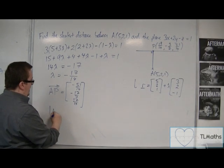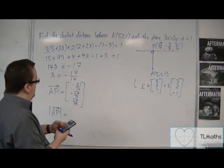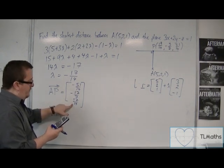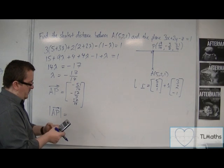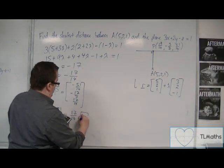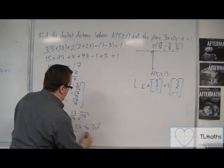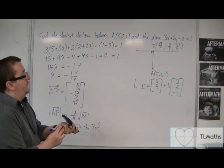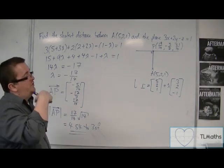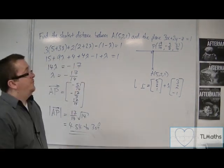I now want to find the length of that vector: √((51/14)² + (17/7)² + (17/14)²) = 17/(14)·√14, which is 4.54 to 3 significant figures. That is the shortest distance between the point and the plane. We used the normal vector of the plane to generate a line through A, found the intersection point P, and then calculated the length AP.